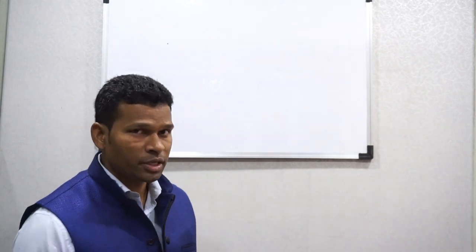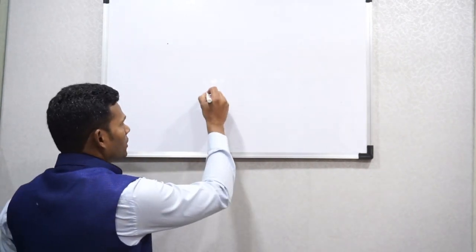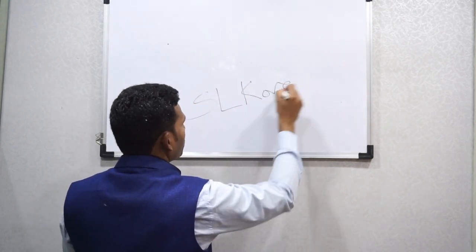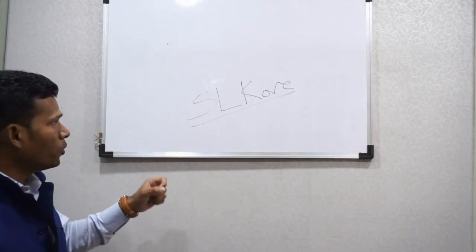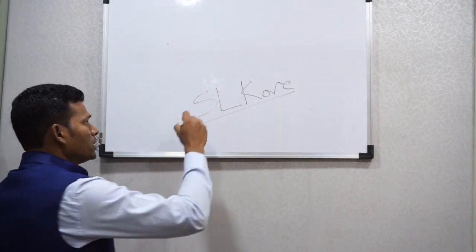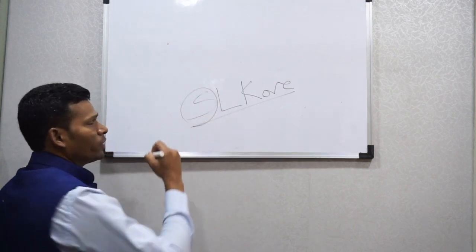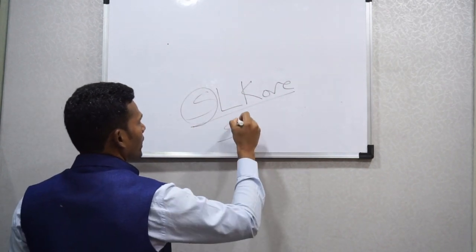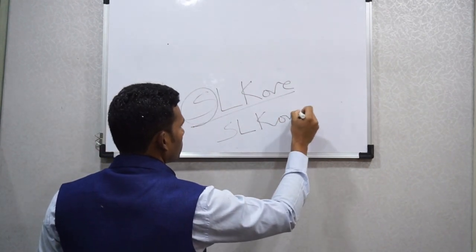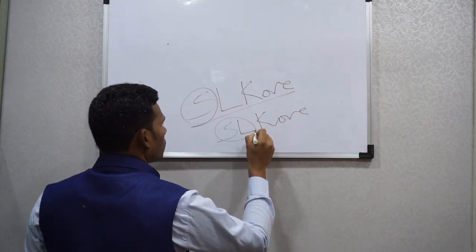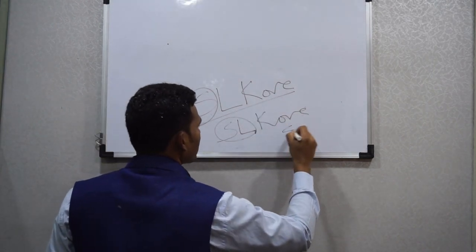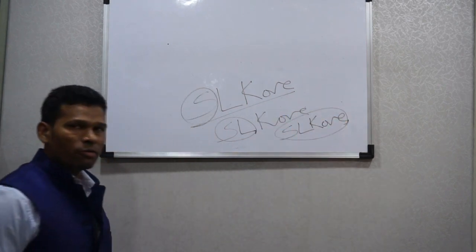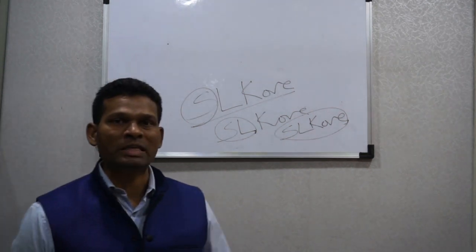There are various types of signatures. Let's assume this is a signature of a person. Now if that person is doing this kind of encircling, this is one kind of encircling. The person can encircle in this way as well, or they can do it like this as well. So there are various types of encircling of the signature.